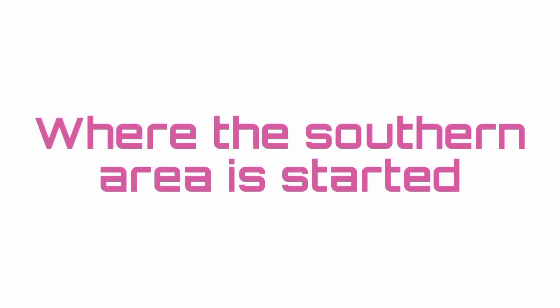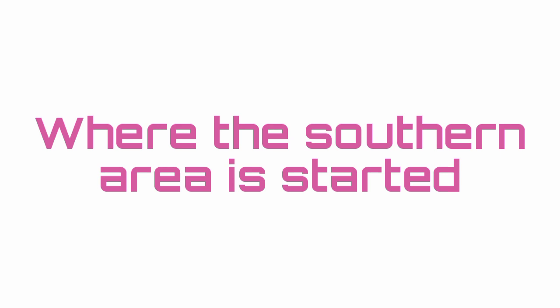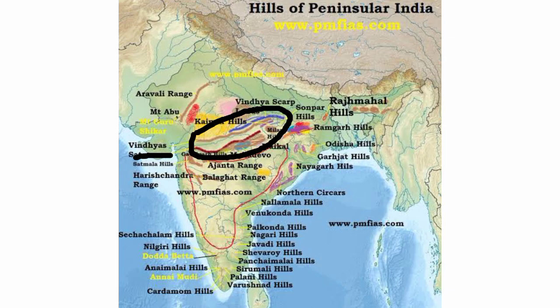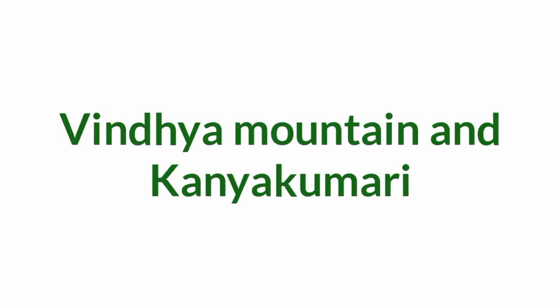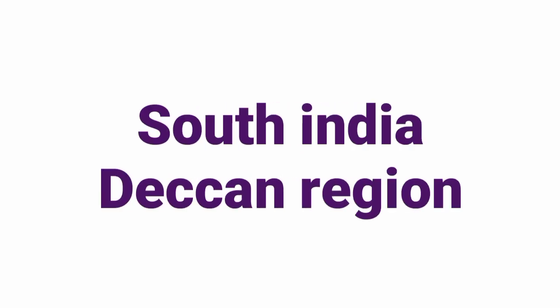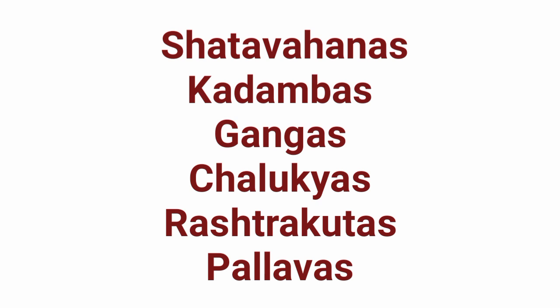Let us first see where the South Indian dynasties started. The Vindhya mountain separates north and south India. In our India map, we see the Vindhya mountain here — it separated the north and south India. The area between the Vindhya mountain and Kanyakumari in the south is called South India or the Deccan region. The dynasties which ruled in this area were the Shatavahanas, Kadambas, Gangas, Chalukyas, Rashtrakutas, and Pallavas.